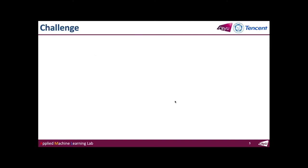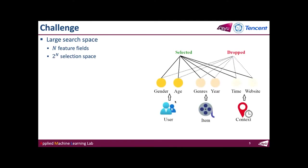For these reasons, we aim to design an efficient feature selection framework for deep recommender systems. However, this task is challenging due to the huge search space. Suppose there are n feature fields; the total number of possible feature subsets is 2 to the power of n. For example, if there are 6 feature fields and 2 choices for each field — selected or dropped — then the size of the space is 2 to the power of 6. To address this issue, we propose AutoField.